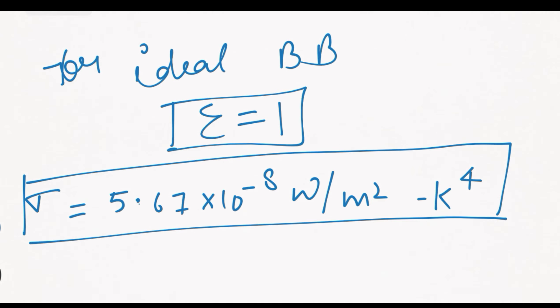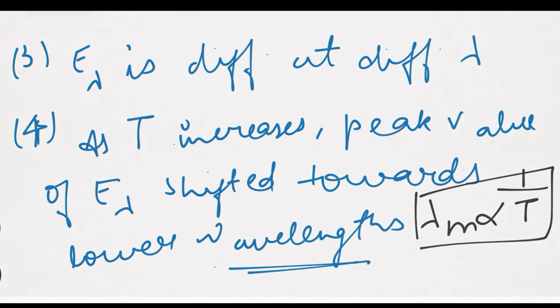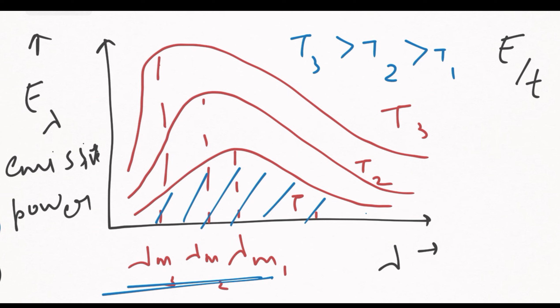The sixth observation was that the peak value of emissive power E_m is proportional to T to the power 5. To explain the full black body curve, two scientists came forward: first was Wien, and the second was Rayleigh-Jeans. Wien's formula only explained the lower wavelength portion, and Rayleigh-Jeans only explained the higher wavelength portion.